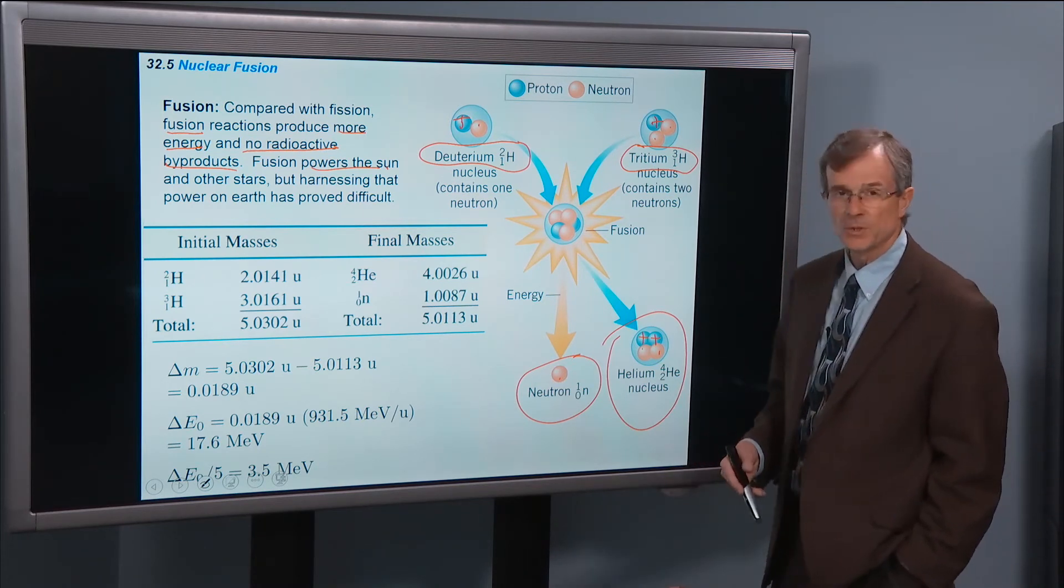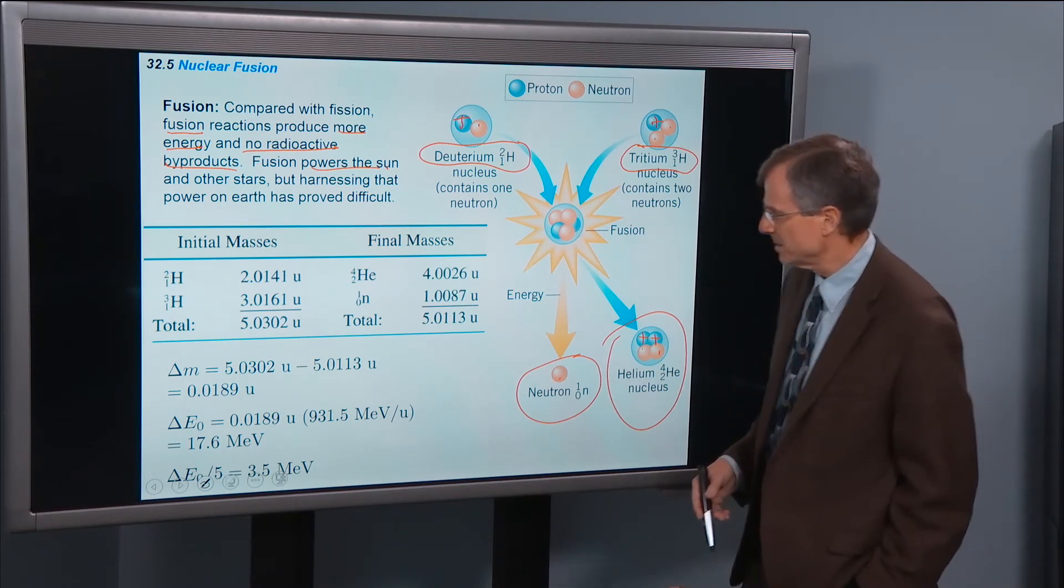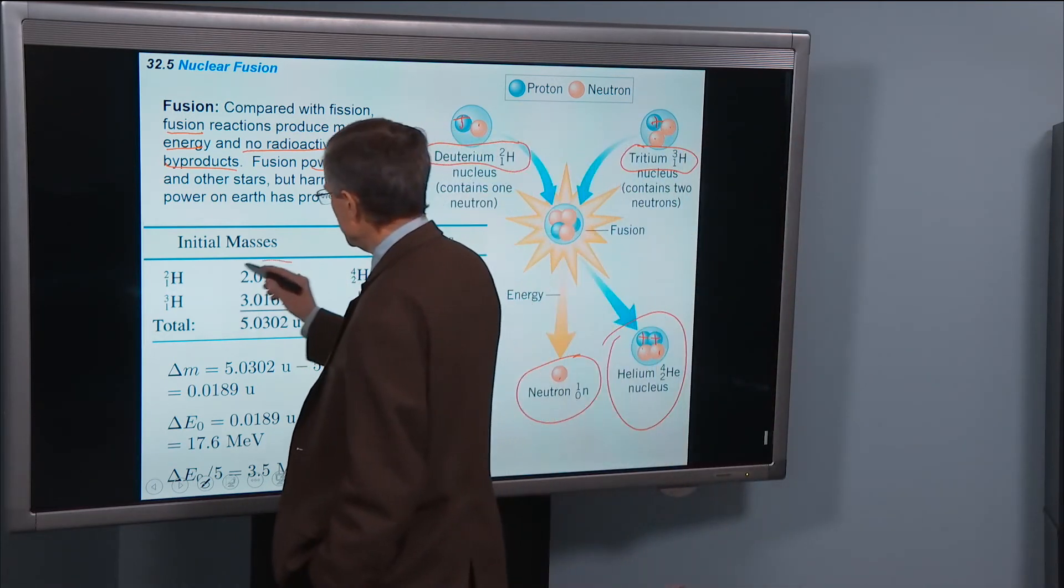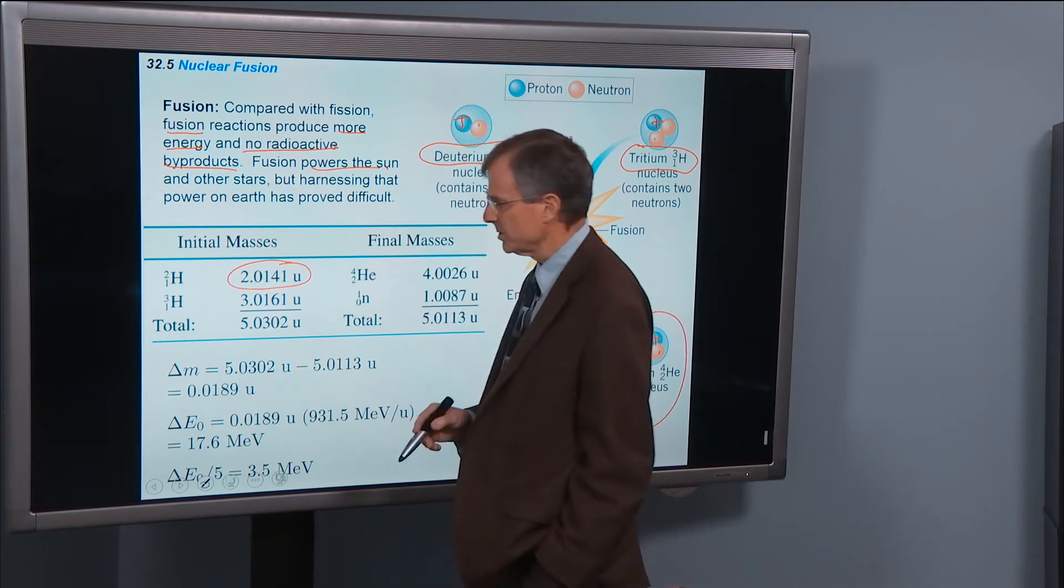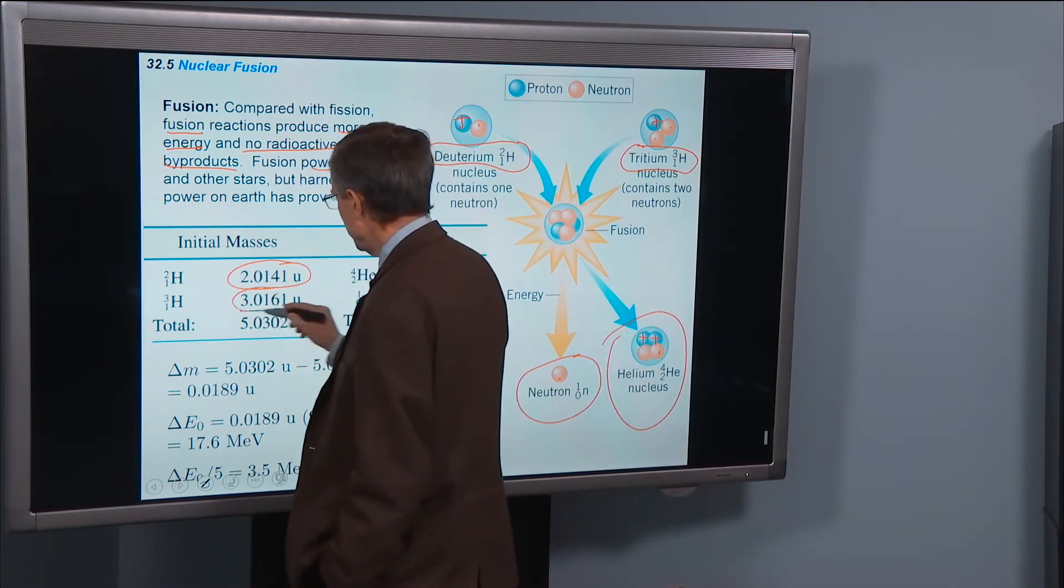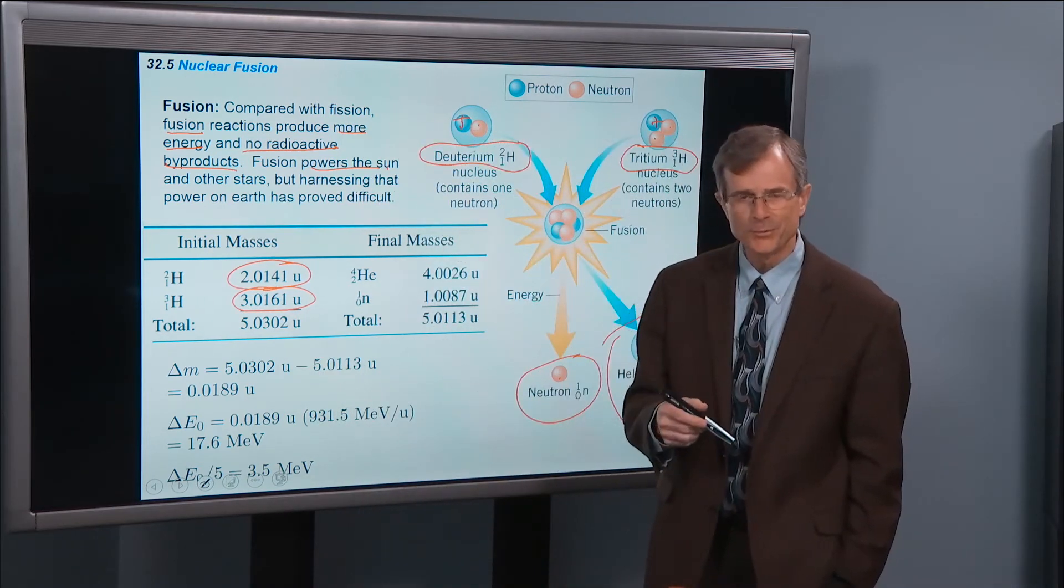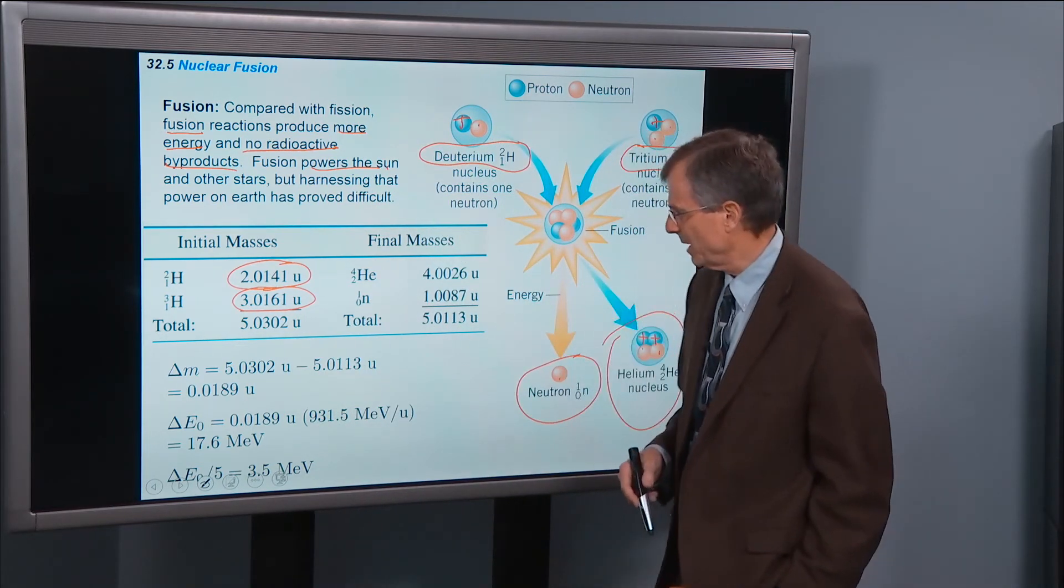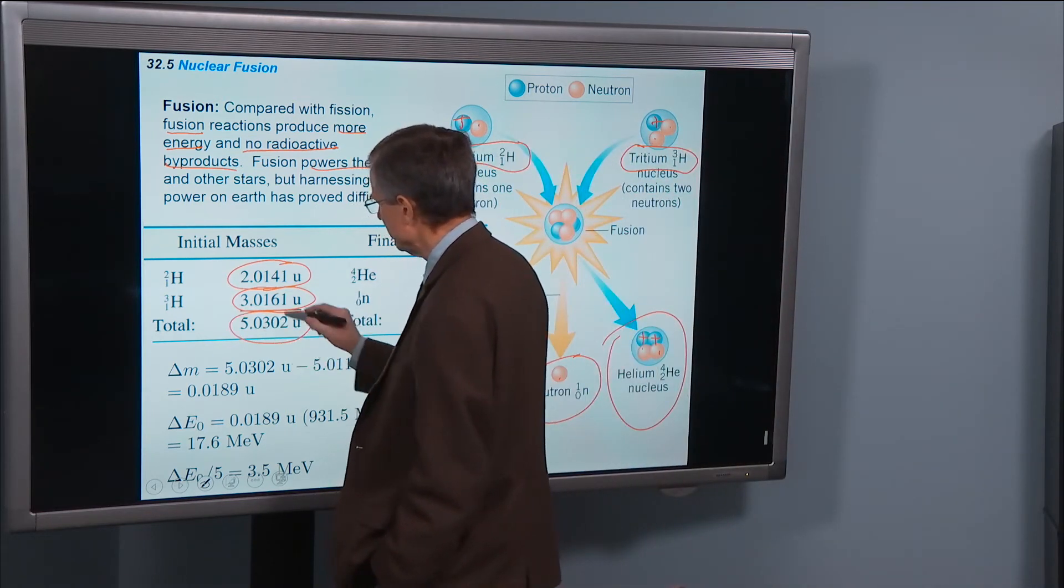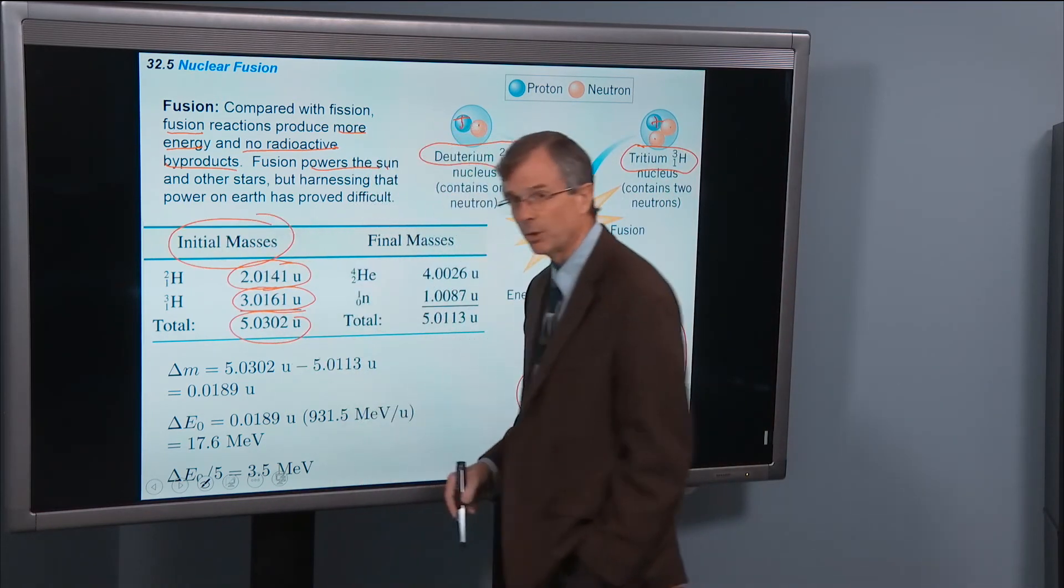What's a mass defect and what's the energy released in this reaction? Well the initial mass, we've got the deuterium. Its mass is 2.01 atomic mass units. And then the tritium has 3.01. Remember it's going to be about the number of nucleons will be the atomic mass. And so for a total mass of the initial mass is 5.03.